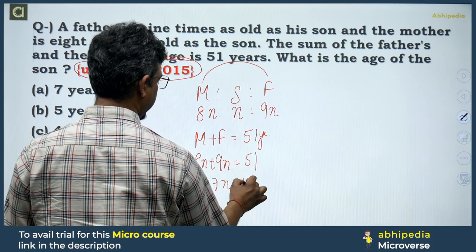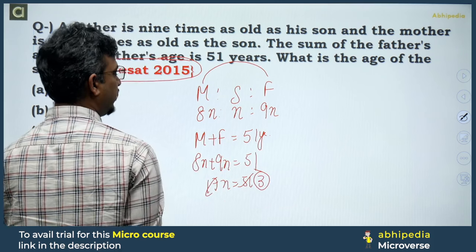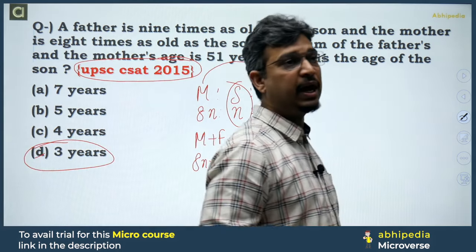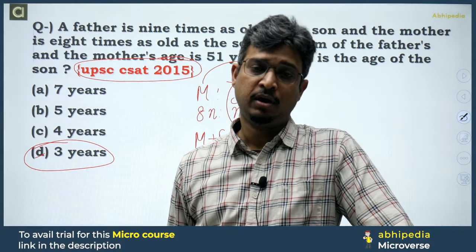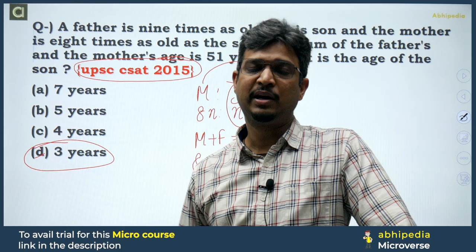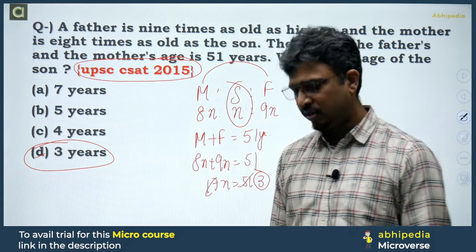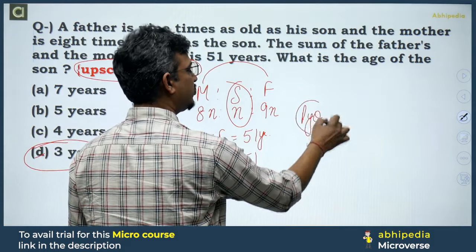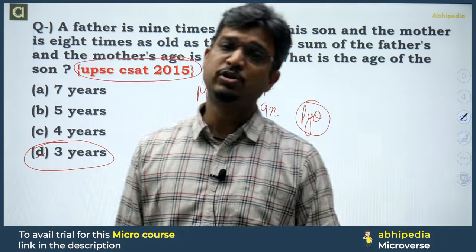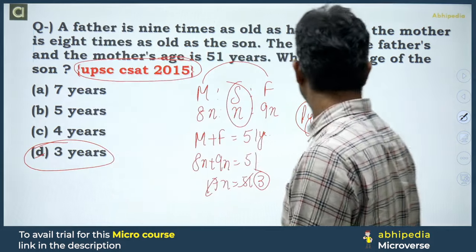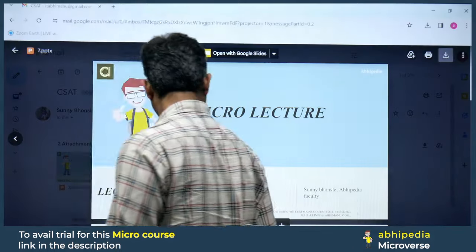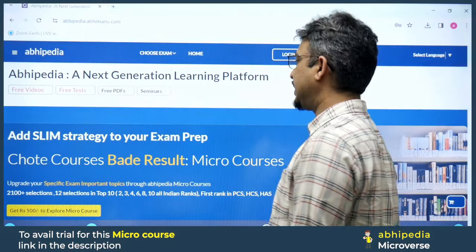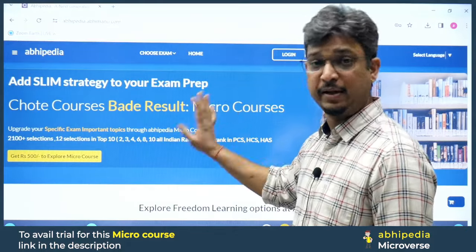So 8x plus 9x is equal to 51. The answer is option number 3. I want to show you more difficult questions as well. This is linked in the description box — the idea is to have a full course, that is our micro course.